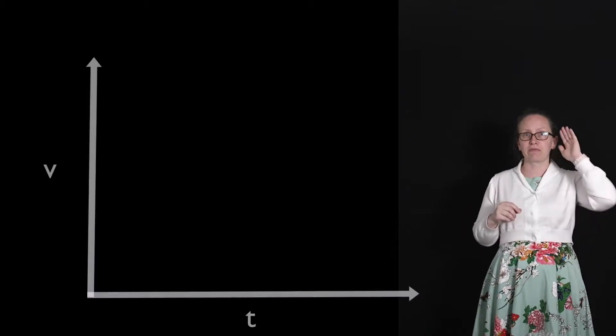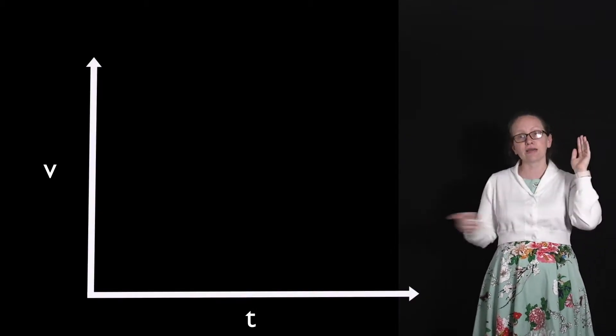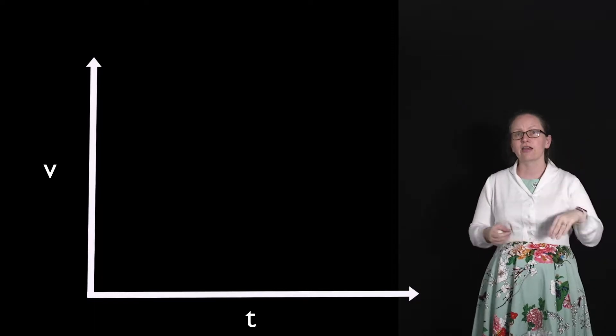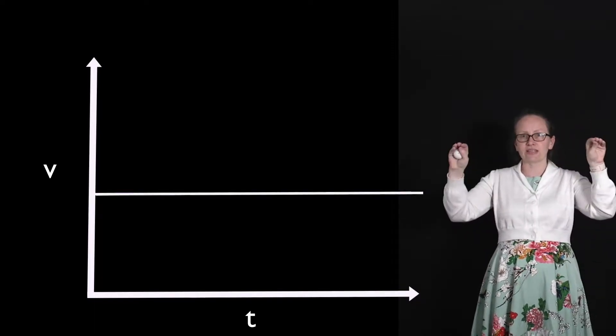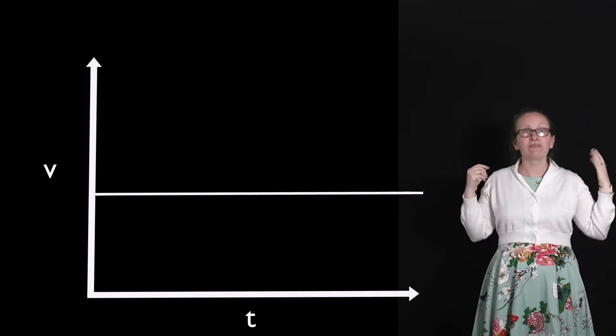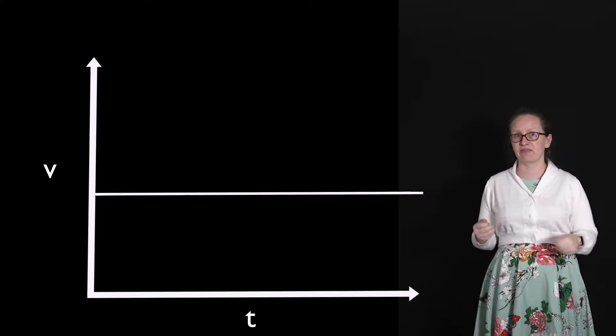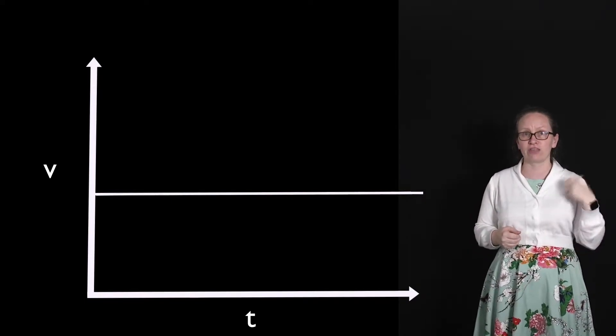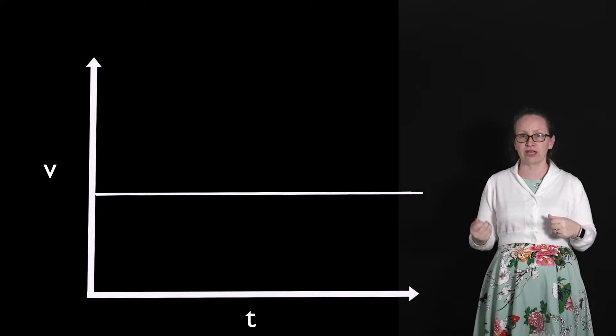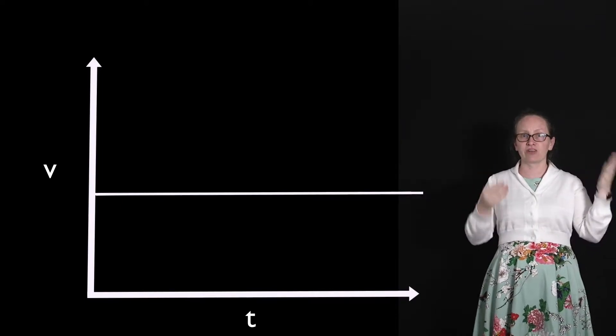The other useful graph to draw is a velocity versus time graph. For this same dot traveling with a constant speed, the velocity is always going to be the same. So our velocity-time graph — with velocity along the y-axis and time along the x-axis — is just a horizontal line as it's always equal to the same value.